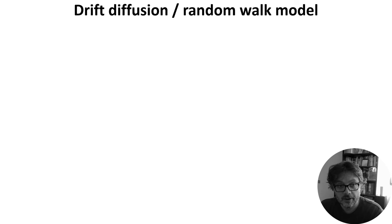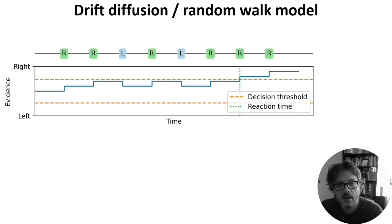There's a beautifully simple theory for how we make these decisions which can account for these reaction times. Imagine that as time goes by, sometimes a bit of evidence arrives that on its own is unreliable but is suggestive that the dots are moving right rather than left, then another, followed by one that suggests that the left is more likely, and so on. We keep track of a running total of how much evidence we've received that suggests right versus left, and once it crosses some threshold, we make our decision.